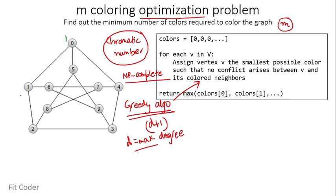Starting at vertex 0, no colors are assigned, so we assign color 1. At vertex 1, the adjacent vertex has color 1, so the smallest assignable color is 2. At vertex 2, the adjacent neighbor has color 2, so the smallest color is 1. At vertex 3, the adjacent vertex has color 1, so the smallest color without conflict is 2.